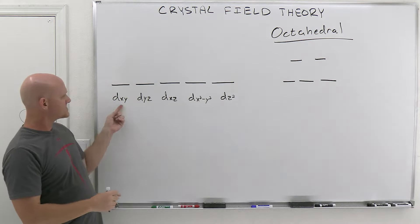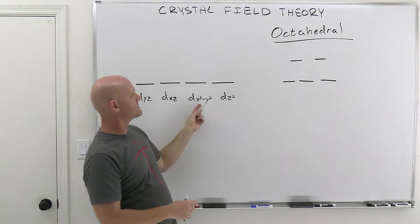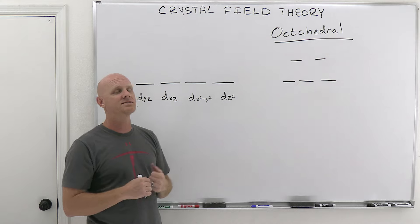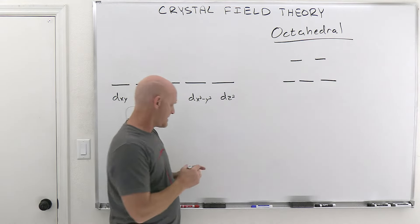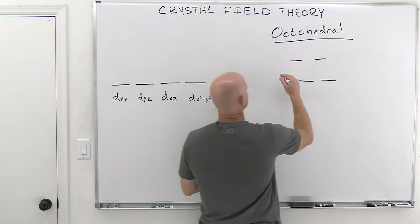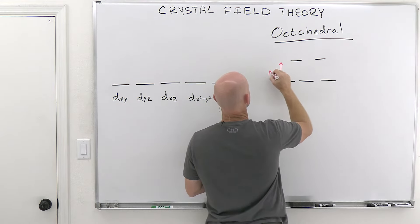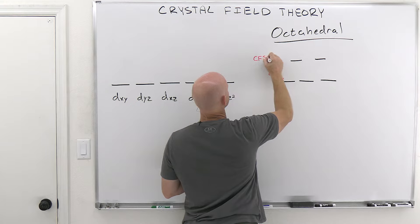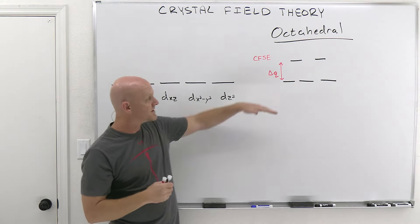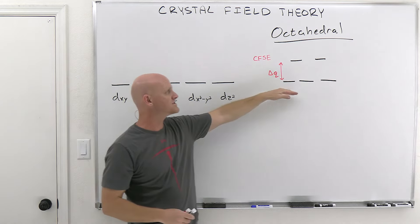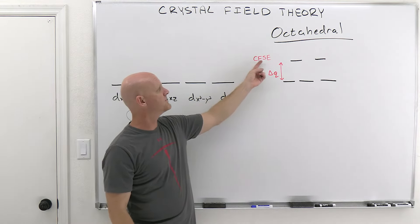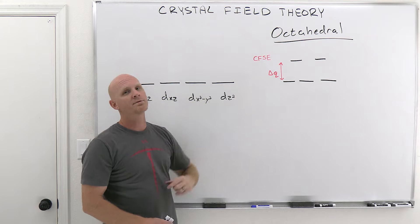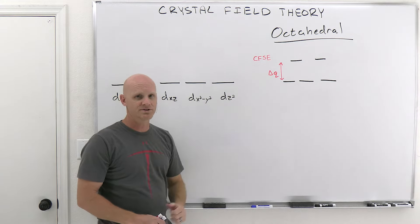In the octahedral splitting pattern, dxy, dyz, and dxz are the lower energy set, while dx²−y² and dz² are the higher energy set — because these two are on the axes where ligands approach. The energy difference between these sets is called the crystal field splitting energy, abbreviated as delta or delta-Q (also called CFSE — crystal field stabilization energy).